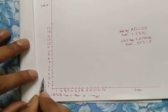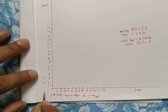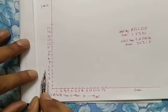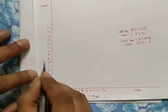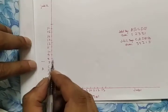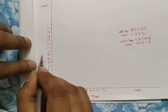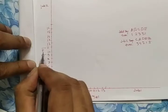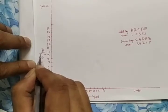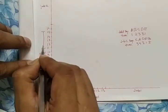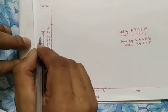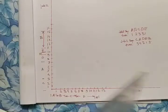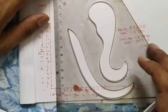For Job 2 on the y-axis: Machine C takes 3 hours, marking 0 to 3. Machine A takes 4 hours, marking 3 to 7. Machine D takes 2 hours, marking up to 9. Machine E takes 1 hour, marking up to 10. Machine B takes 5 hours, marking up to 15. After plotting these, draw the corresponding lines.